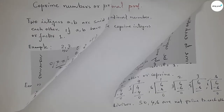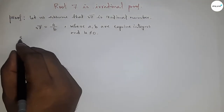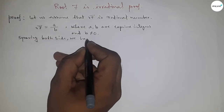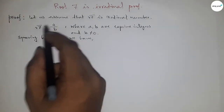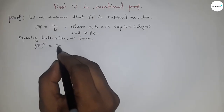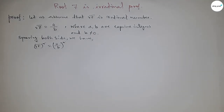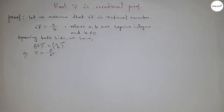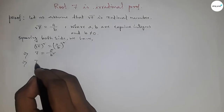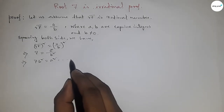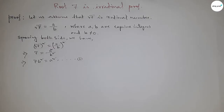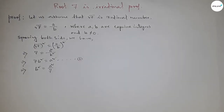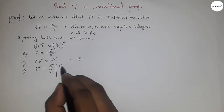Now squaring both sides of the above relation. Root 7 squared equals a upon b squared. Simplifying: 7 equals a squared by b squared. Cross-multiplying gives 7b² = a². This is relation number one. We can also write b² = a²/7.